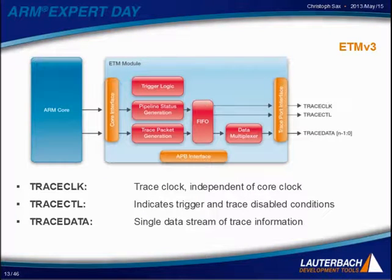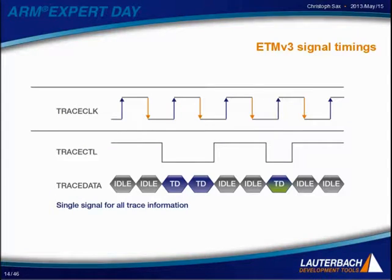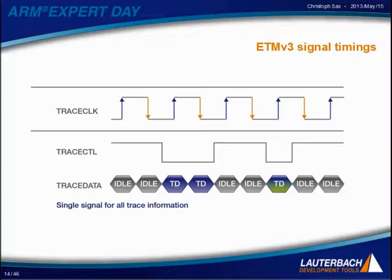The major difference between ETM v1 and ETM v3 is that the pipeline status and the trace data and address information have been merged into one signal. This can also be seen if we compare the signal timing: we have the clock, and the trace control signal indicates, when it goes low, that there are valid trace packets. These trace packets can either contain only execution status information, or can also consist of data or address information, as seen on the right side.